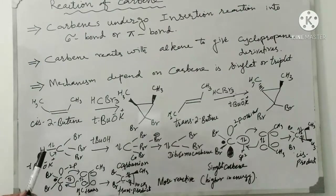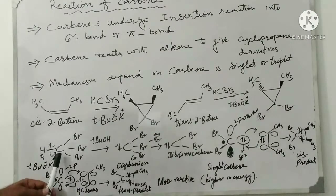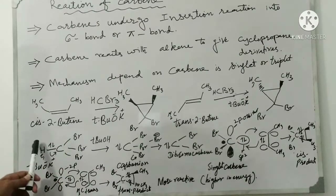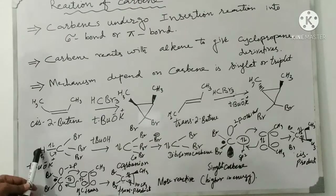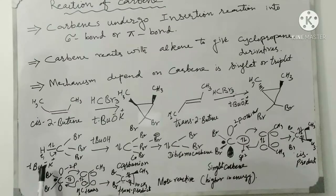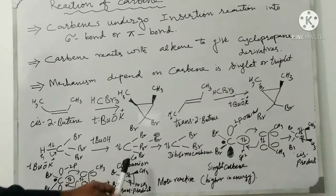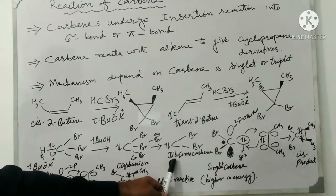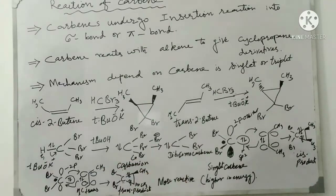Here we discuss how dibromocarbene is formed. Bromoform has only one proton, and the three bromo groups have a negative inductive effect which makes this proton acidic. The base potassium tertiary butoxide takes this proton, generating a carbanion. The single C–H bond has two electrons with opposite spin. Then one of the halogens — bromide — leaves, giving us the dibromocarbene intermediate.